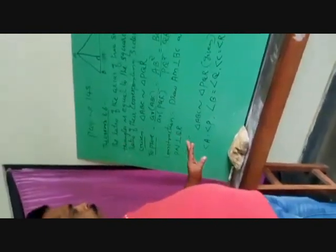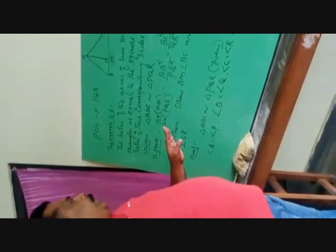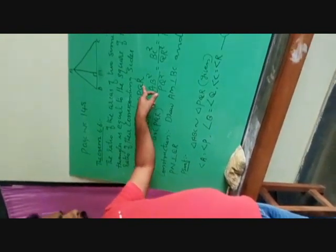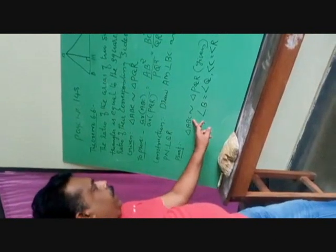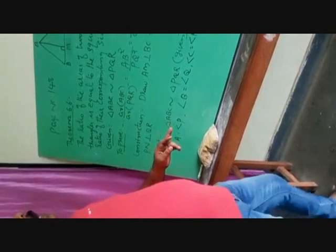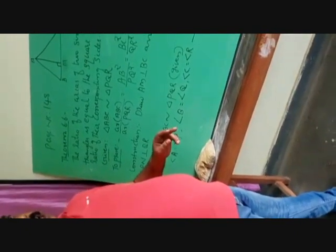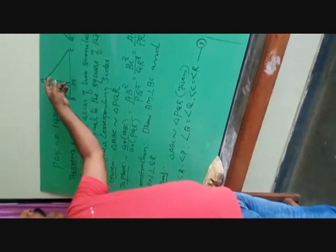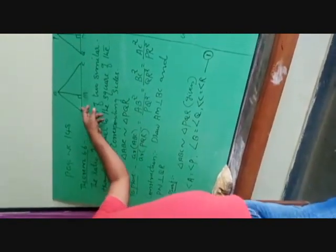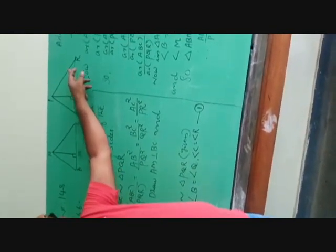Now we can write the proof. Triangle ABC similar to triangle PQR — that is already given. In two similar triangles, the corresponding angles are equal. Therefore, we can write: angle A is equal to angle P, angle B is equal to angle Q, and angle C is equal to angle R.